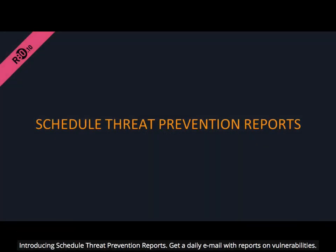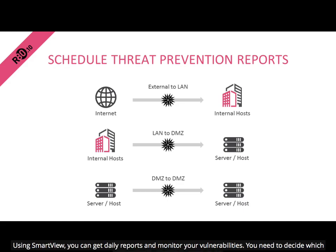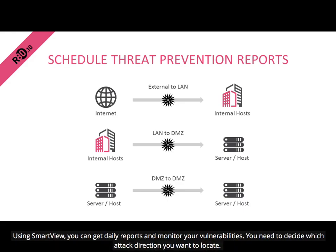Introducing Schedule Threat Prevention Reports — get a daily email with reports on vulnerabilities. An attacker can use a server or a network vulnerability to exploit a server in your network. Using SmartView, you can get daily reports and monitor your vulnerabilities, and decide which attack direction you want to locate.